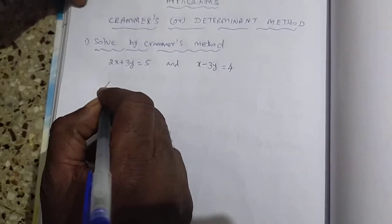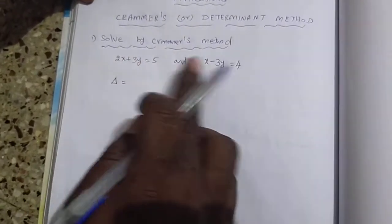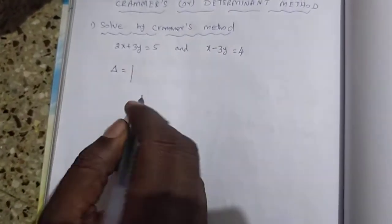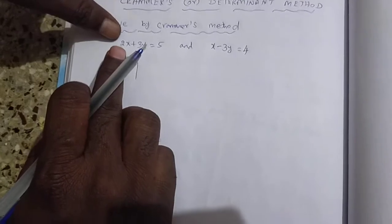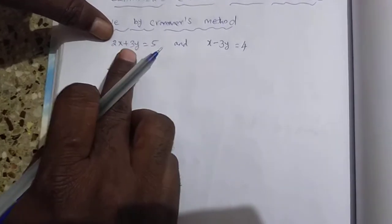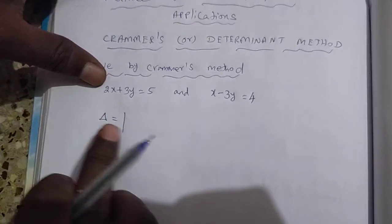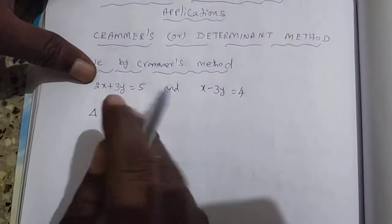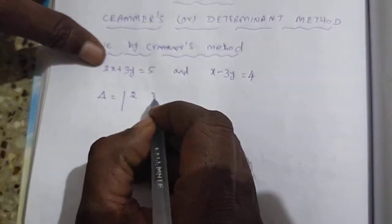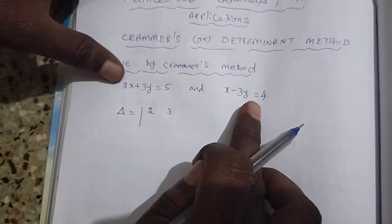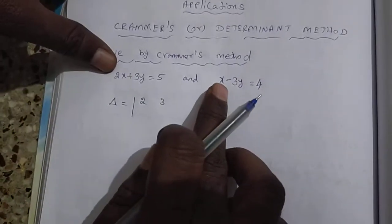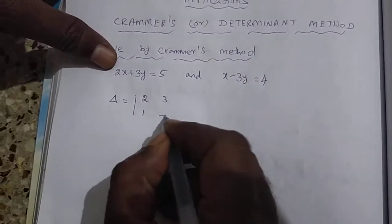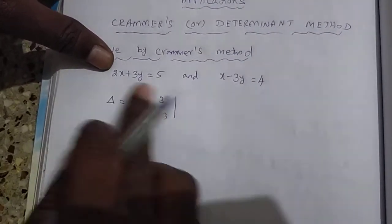First you have to find delta. From these two equations, we have to find delta. Delta is nothing but the X coefficient and Y coefficient. So delta means you take X coefficient 2 and Y coefficient 3. For the other equation, you take X coefficient 1 and Y coefficient minus 3. This gives us delta.